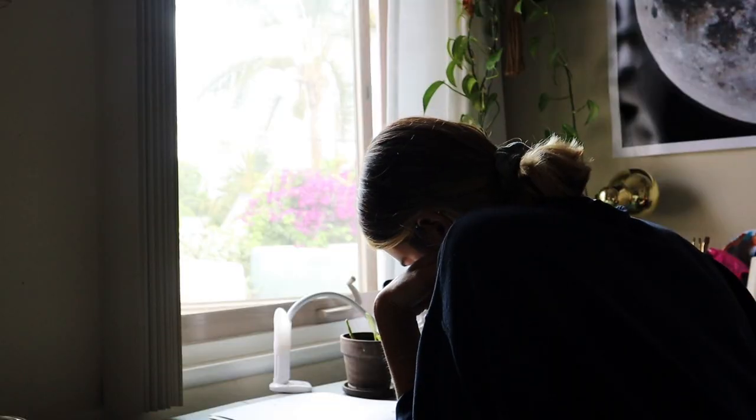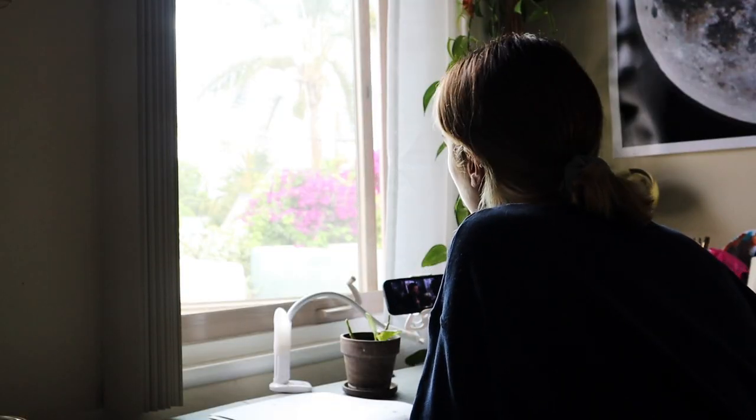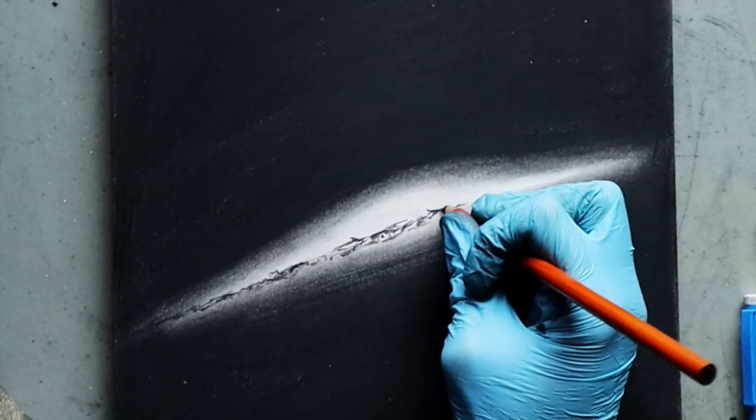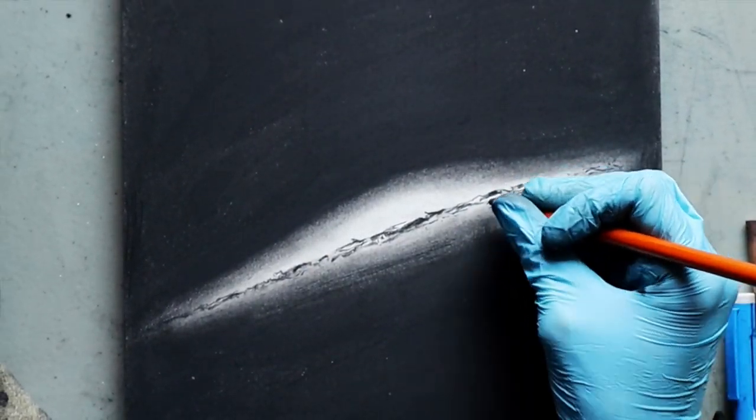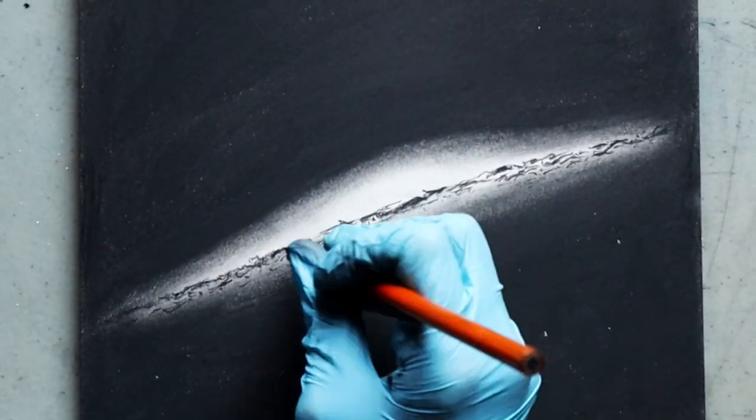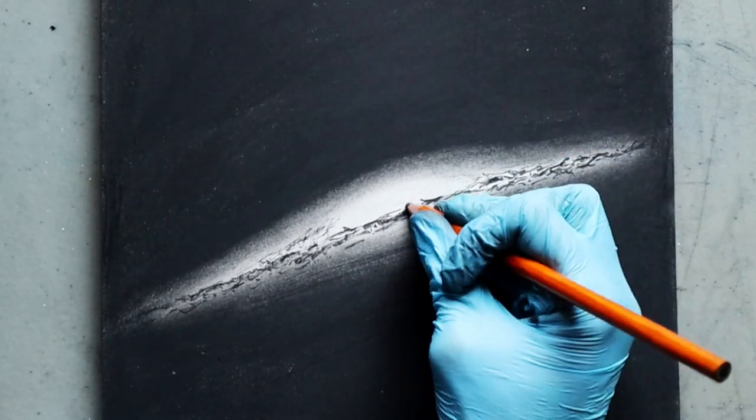Once you add in all the details, that is really what brings the whole piece together. But getting that background set prior to adding the details is very important because when working with charcoal it blends very easily. So I wanted to make sure that the background was completely set and practically finished so that way when I added the details on top it could almost be done.